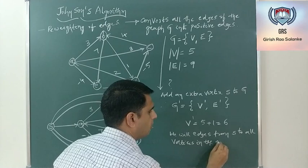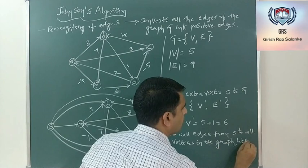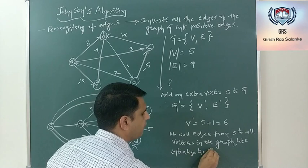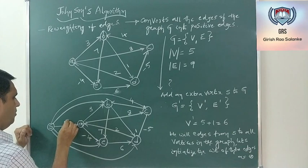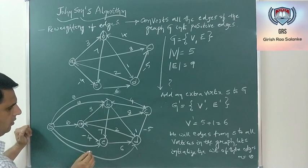We initialize the weight of those edges as 0. That means S to A = 0, S to B = 0, S to C = 0, S to D = 0, and S to E = 0.